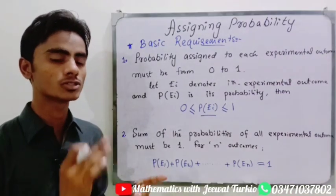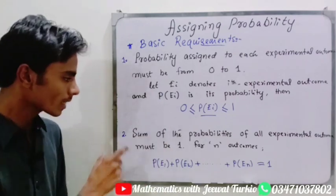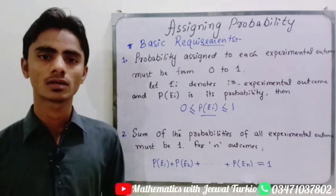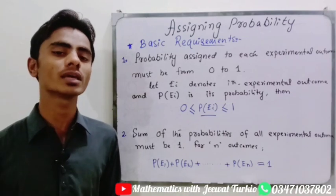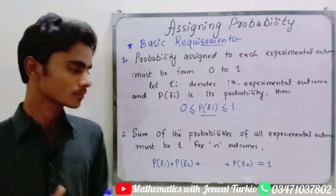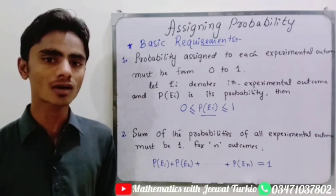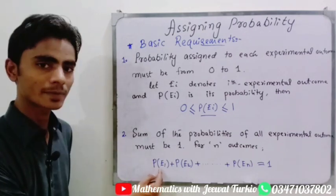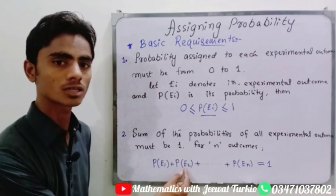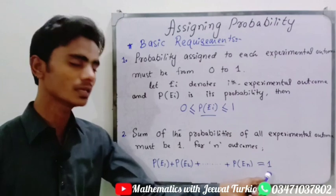The second requirement for assigning probability is that the sum of all the probabilities of the experimental outcomes must be one. So for an experiment with n outcomes, p of e1 plus p of e2, and so on — the probability assigned to every outcome combined must equal one.